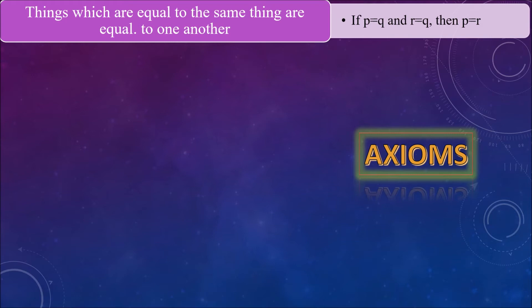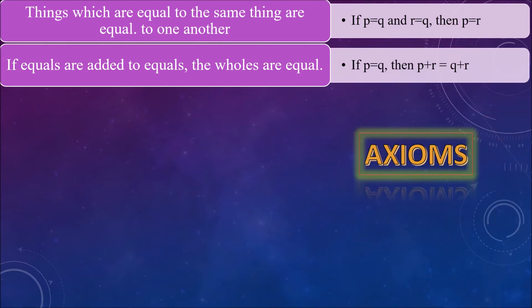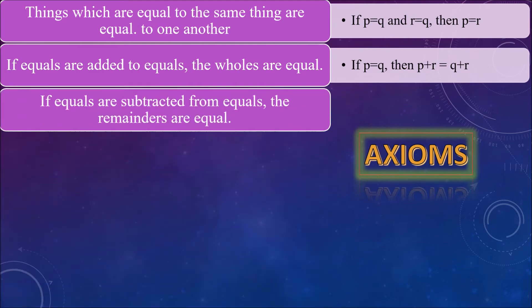Second axiom is: if equals are added to equals, the wholes are equal. That is, if p is equal to q, then p plus r is equal to q plus r. Third axiom is: if equals are subtracted from equals,